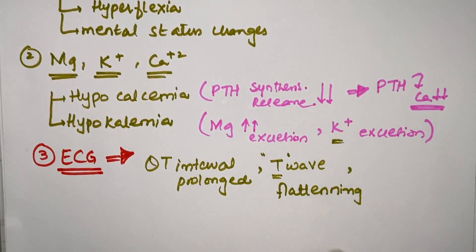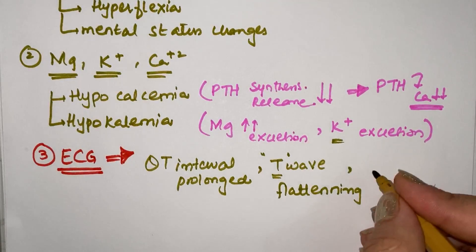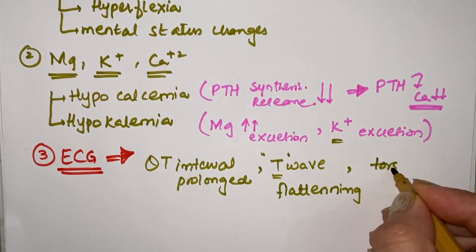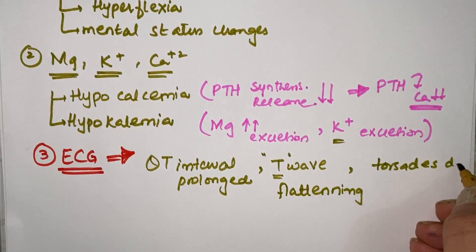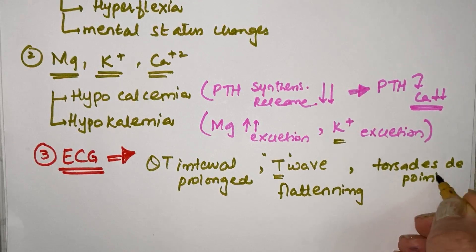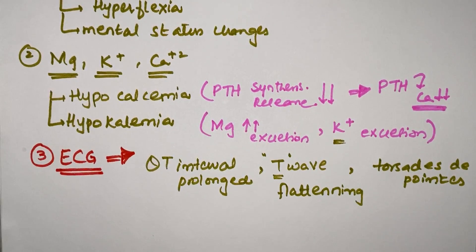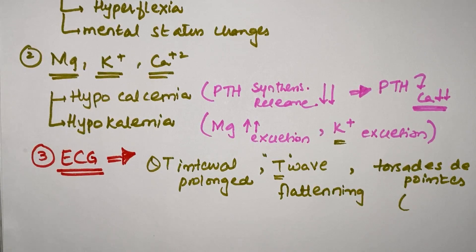And when this heart rate and T waves are going down, reflex tachycardia will develop. So for this reflex tachycardia, a ventricular arrhythmia called torsades de pointes will develop. Very important, that's a condition of ventricular tachycardia.